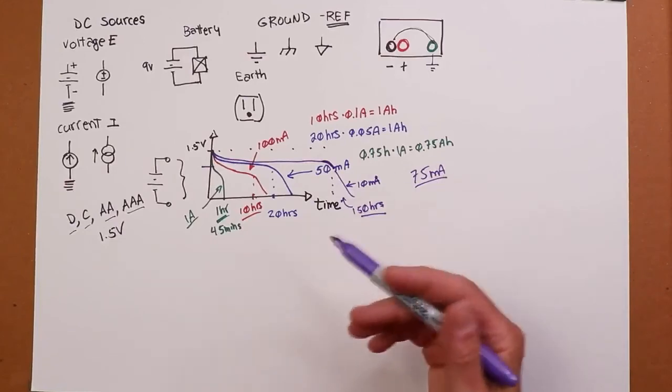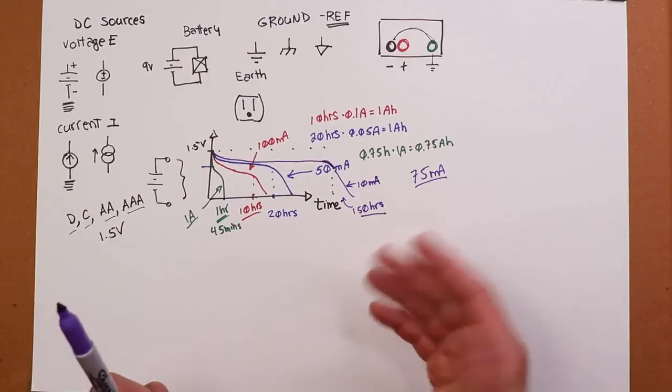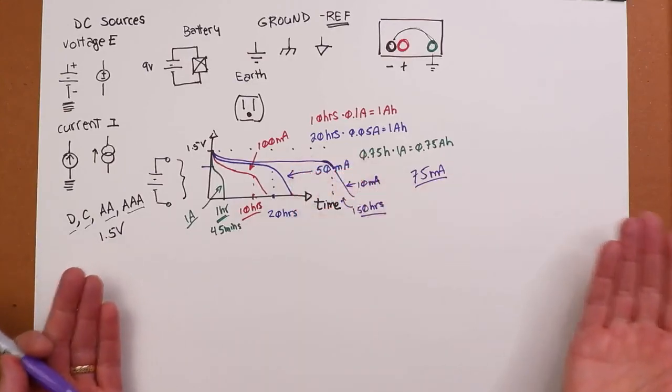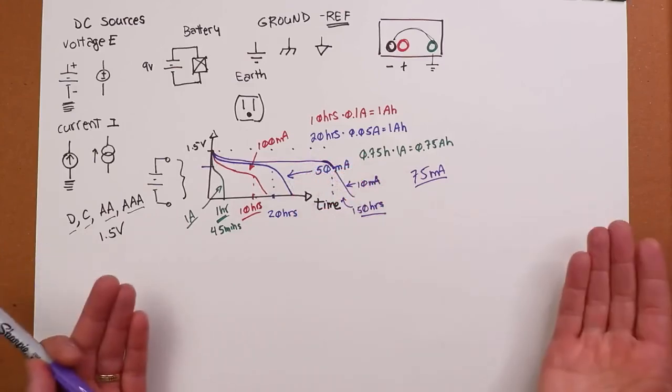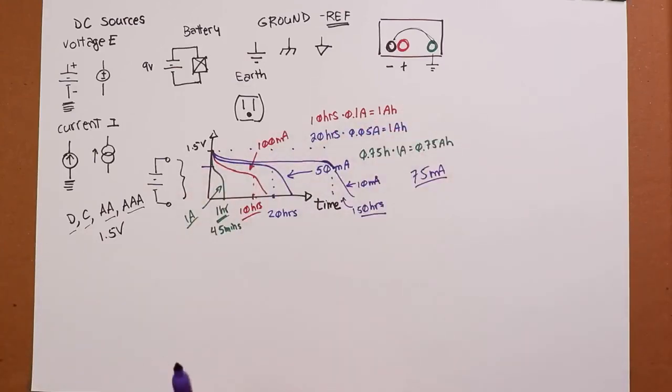Depends a little bit on the application. If you have an old-fashioned incandescent light bulb flashlight, well, what happens if it gets low? Well, the thing just gets dim. It still works. It's just dim. On the other hand, some solid-state devices, if you don't have enough voltage, that's it. Nothing works. So it will depend on a bunch of things. But that does give you an idea.